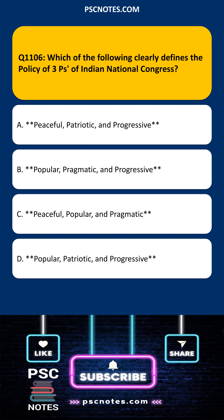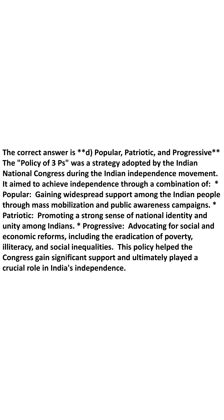Which of the following clearly defines the policy of three Ps of Indian National Congress? Option A: peaceful, patriotic, and progressive. Option B: popular, pragmatic, and progressive. Option C: peaceful, popular, and pragmatic. Option D: popular, patriotic, and progressive. The correct answer is D.